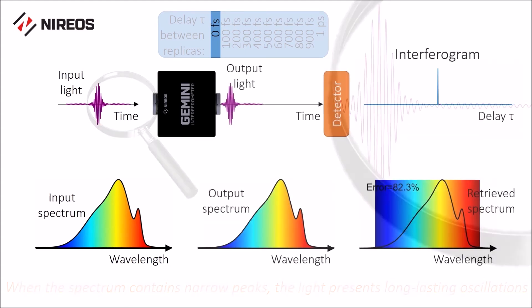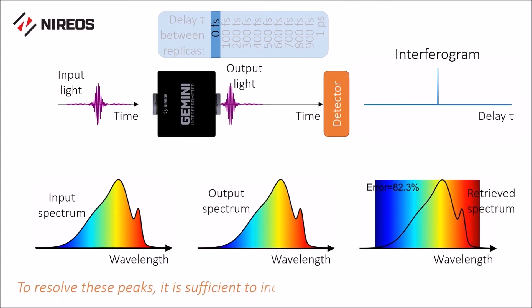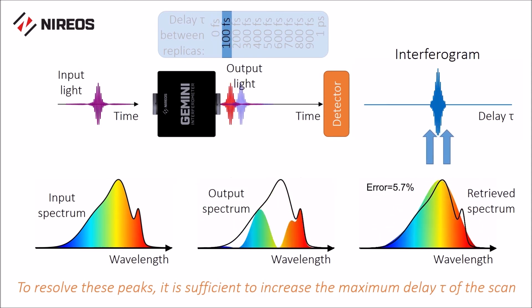To resolve these peaks with Gemini, it is sufficient to increase the maximum delay of the scan to increase the spectral resolution, without any loss of throughput. In fact, at longer delays, the modulation pattern in the output spectrum becomes denser, thus providing those narrow features required to resolve sharp features in the spectrum.